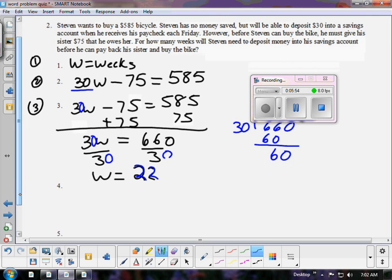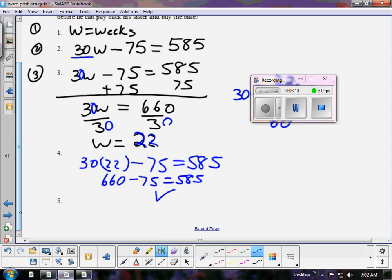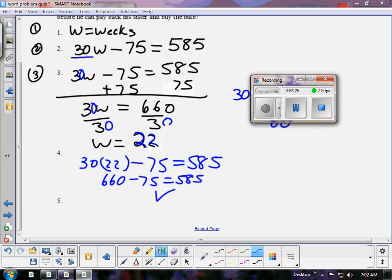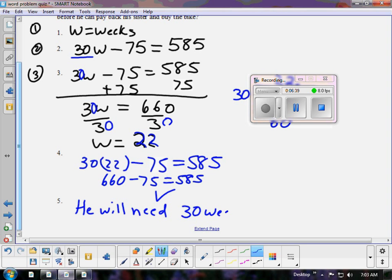That's another reason for a check, a good example of why we need to check our work here. Now does that make sense? 30 times 22 weeks minus 75, is that going to equal enough for the bike? And we know 30 times 22 is 660, minus 75 is 585. So this checks out. And then we answer the question. He will need 22 weeks to buy the bike and pay back his sister.